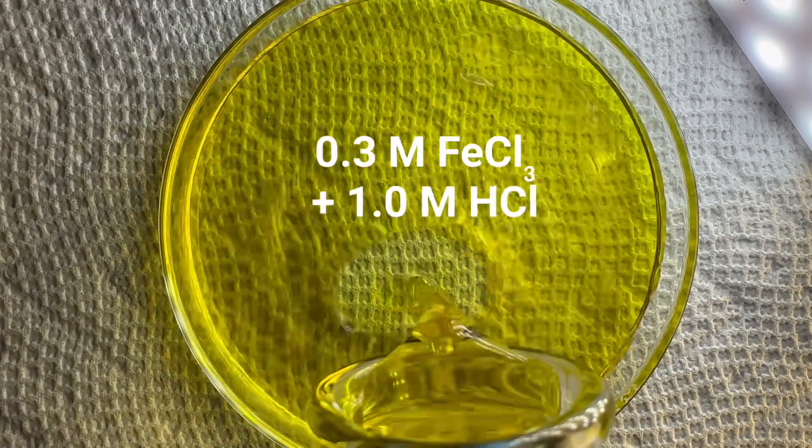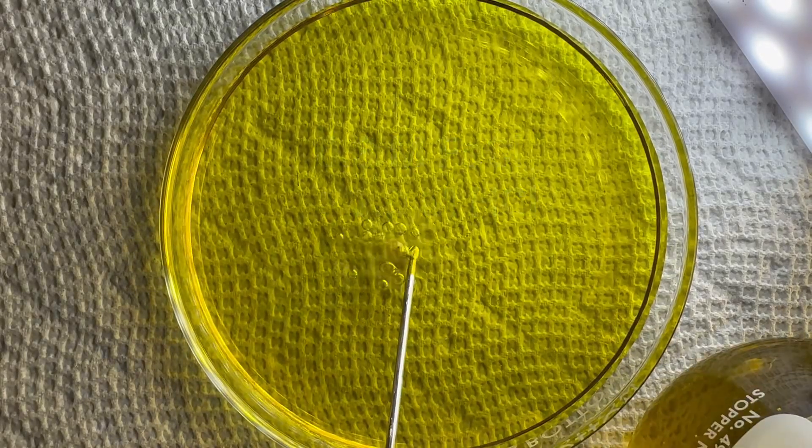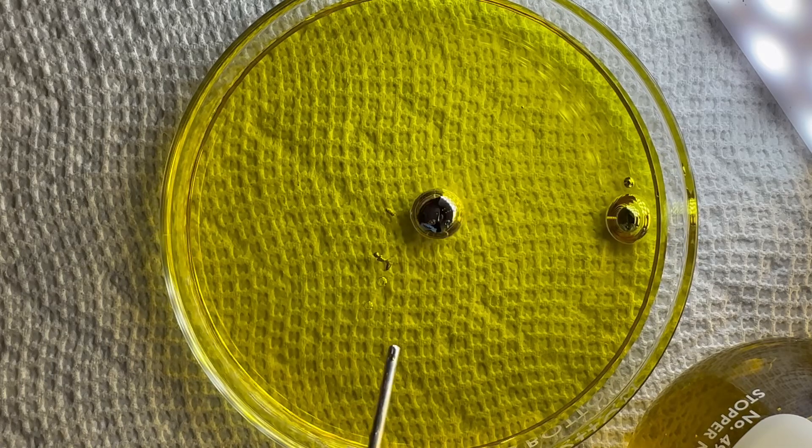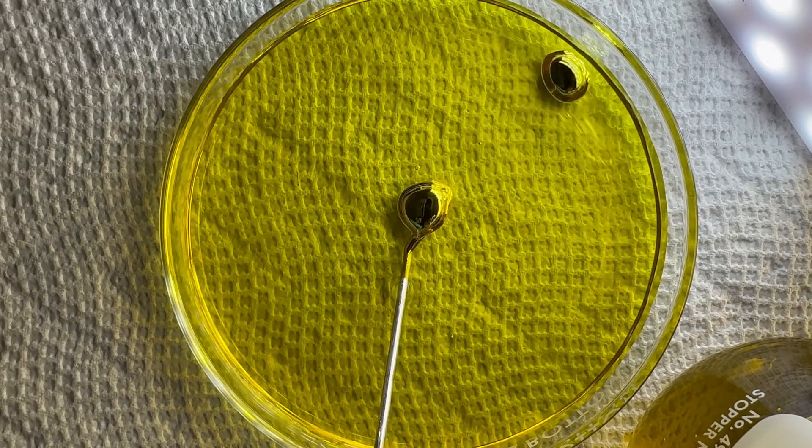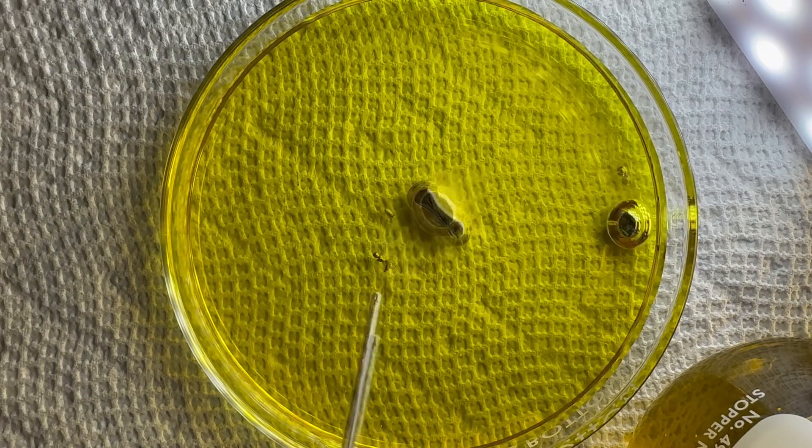So following the instructions in the paper, I filled a Petri dish with a solution of acidified iron-3 chloride. Next, I injected in some Galenstan. Whoa! It looked for a second there like the wormy structure was going to form, but unfortunately, it just ended up beading up into a circular droplet.